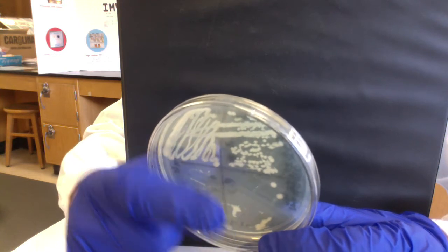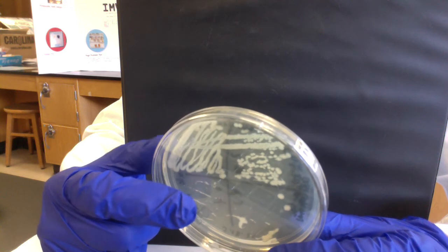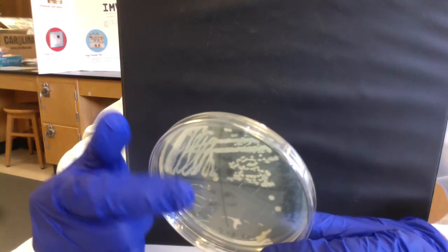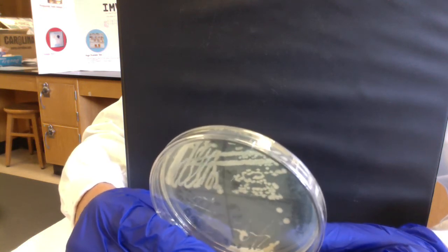On streak plates, it doesn't matter where you get the isolated colonies. In a clinical sample, there might not be many microbial pathogens present, so you might get isolated colonies even in quadrant one. It doesn't matter where you get them, as long as you get them.